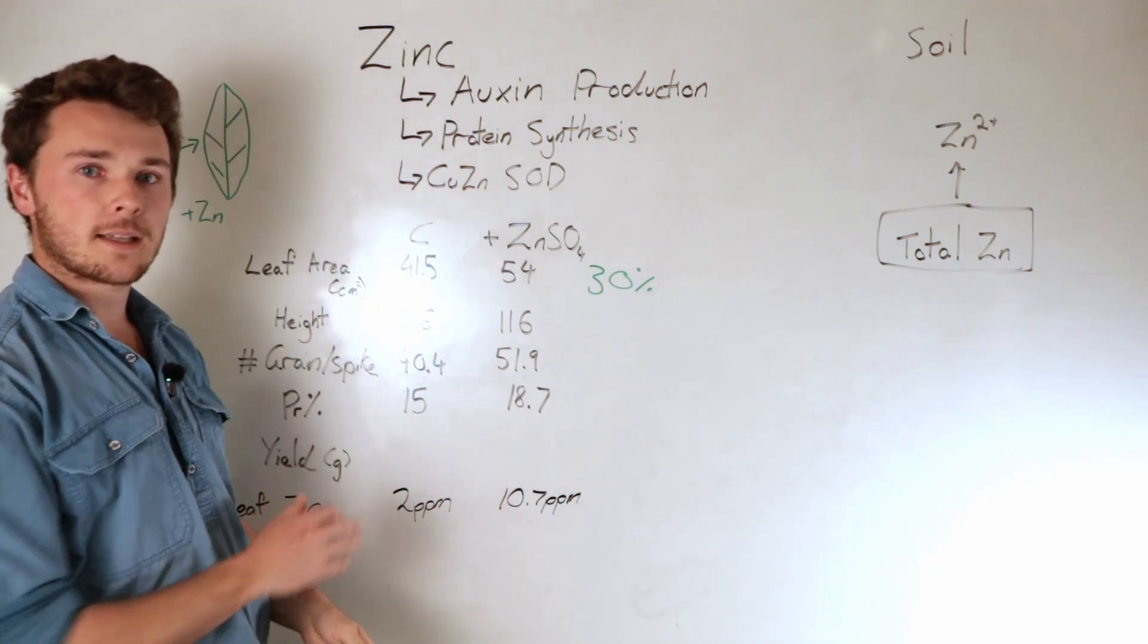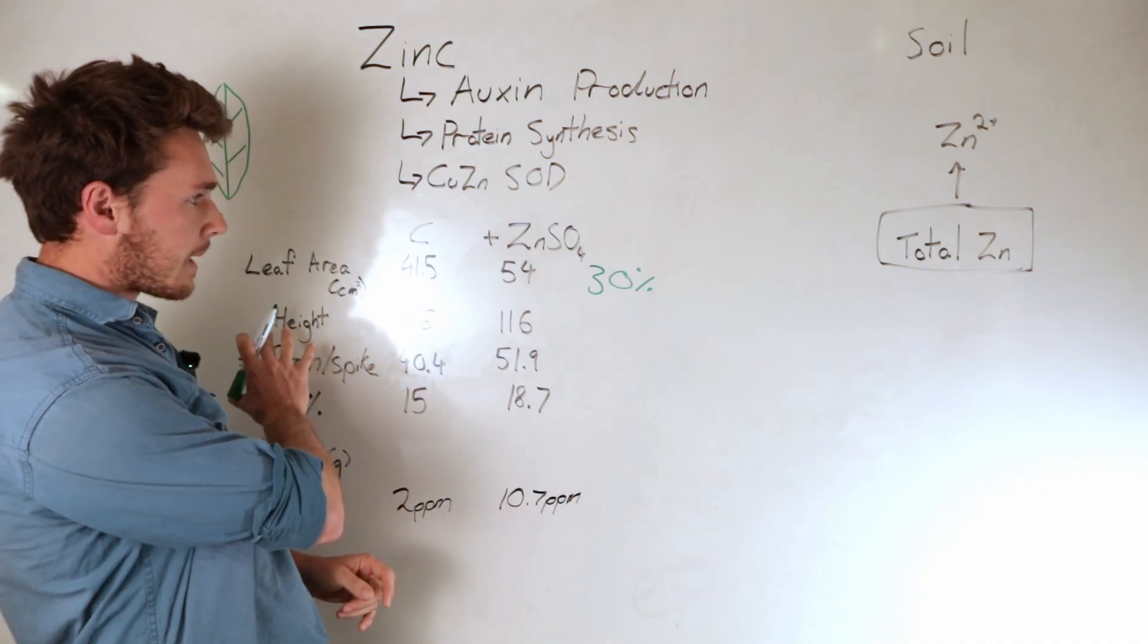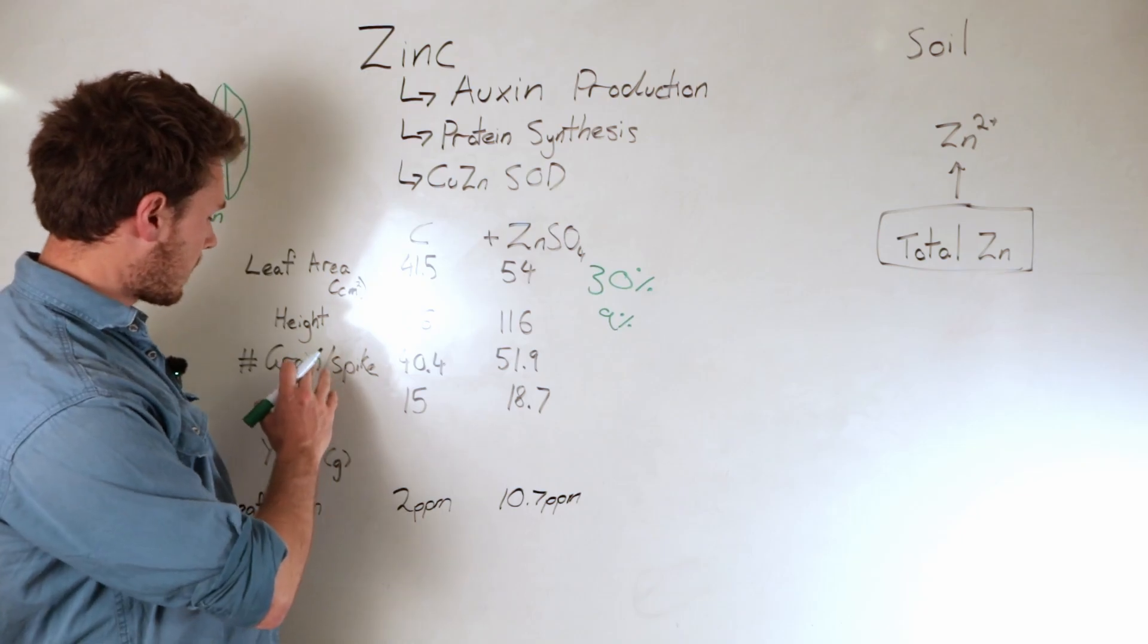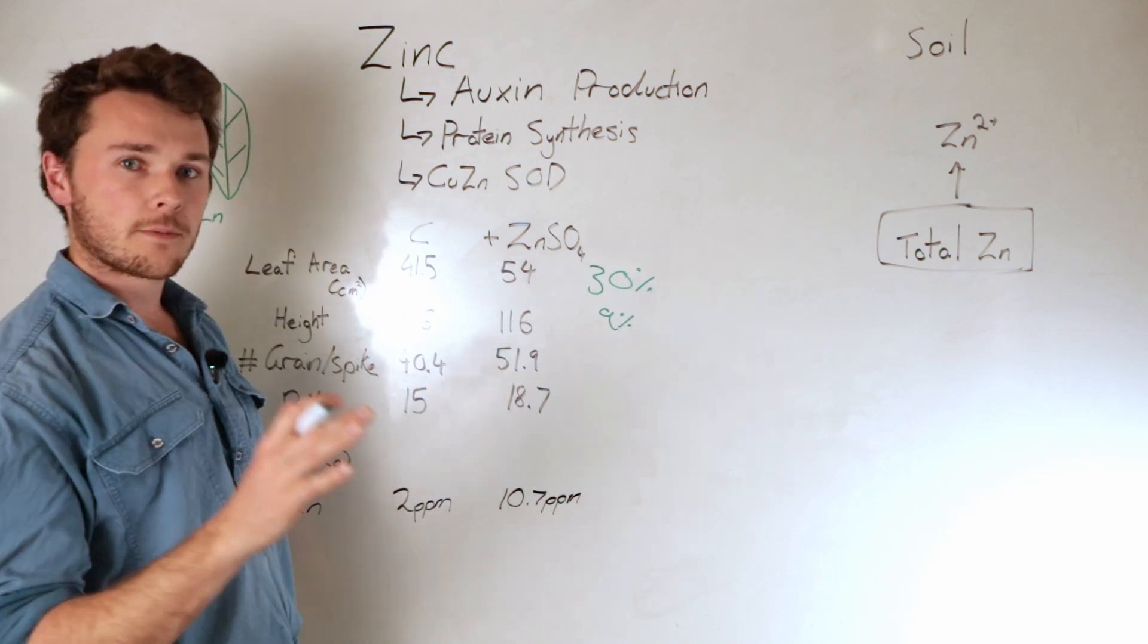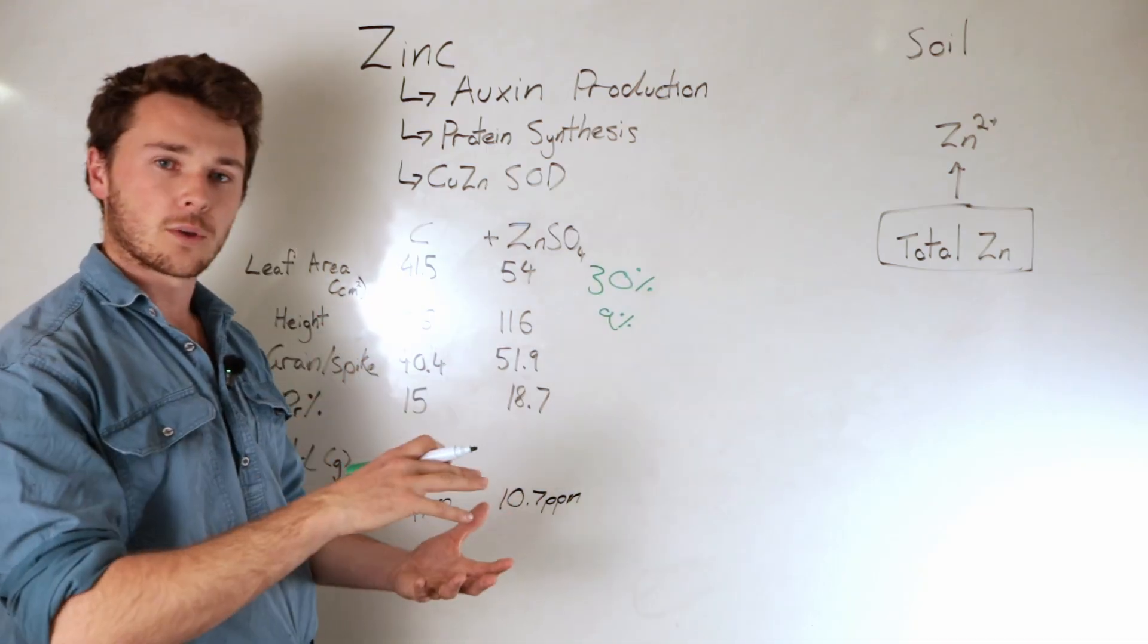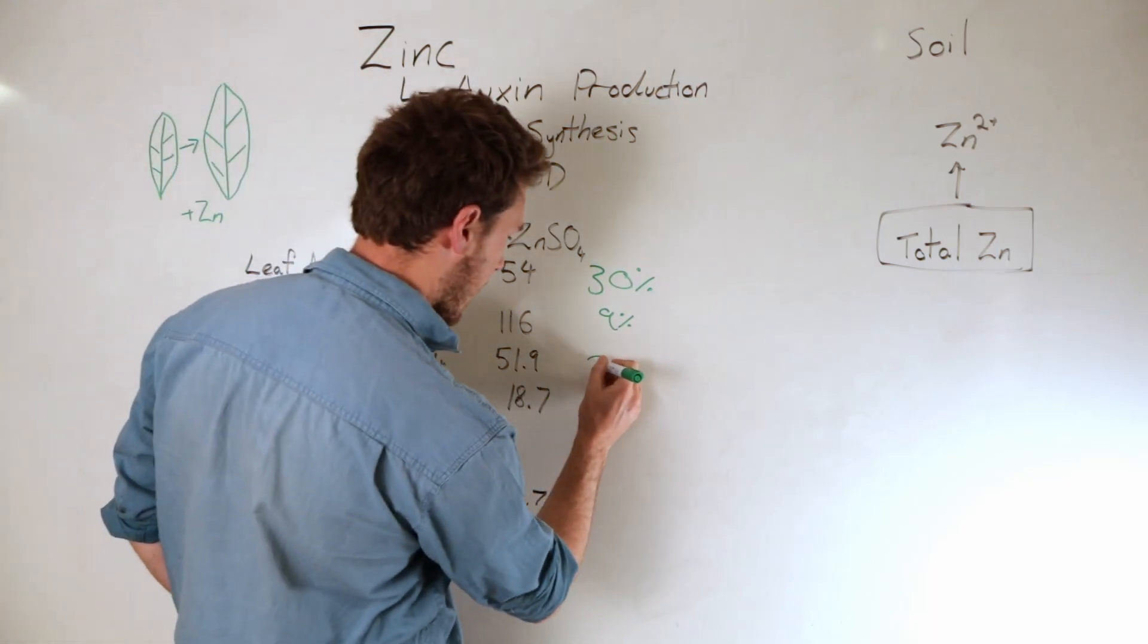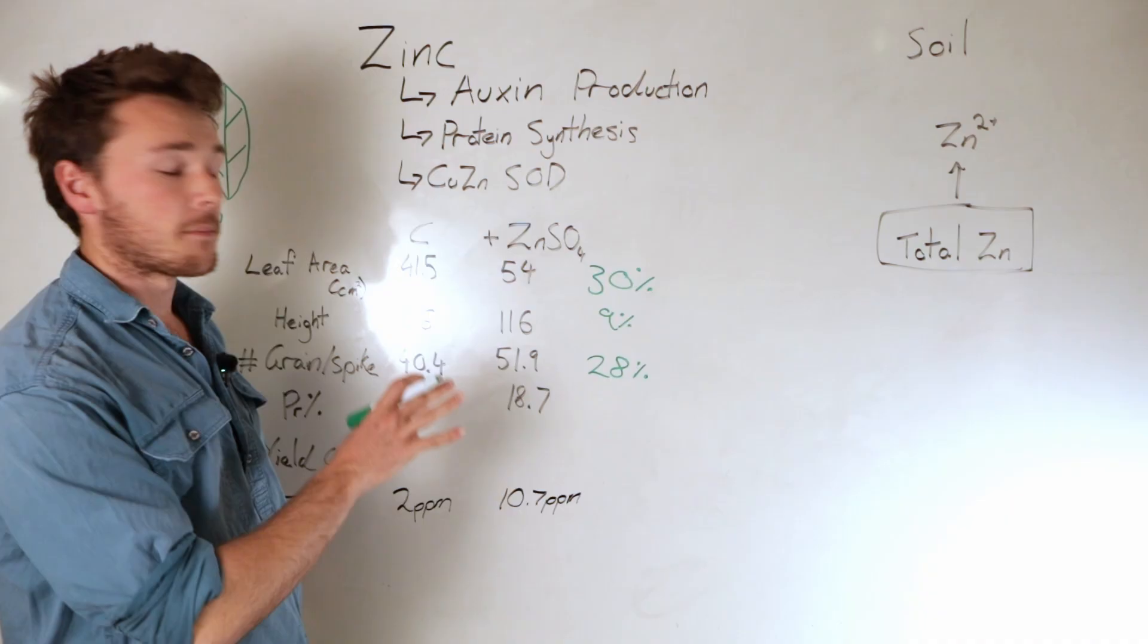Next is the height of the plant. This can be beneficial or not depending on lodging. From a biomass point of view this is helpful. That was a 9% increase, not bad. Next is where it gets interesting because it increased the number of grains per spike from 40 to almost 52. The more grain you have across a hectare means the more they can get filled up with carbohydrates, the higher your yield. Going from 40 to 52 was a 28% increase in the number of grains per spike.